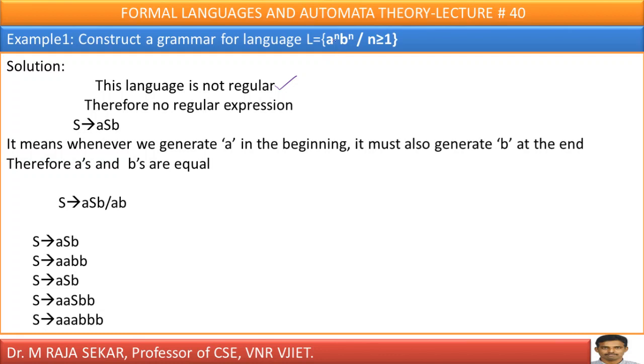What is the nature of this language? If you observe carefully, L equals a power n, b power n, such that n greater than or equal to 1 means if I keep n equal to 1, what is my language? A, b. If I keep n equal to 2, a, a, b, b. What does it mean? This language consists of set of all strings in which you have equal number of a's and b's. How can I write productions for this language?